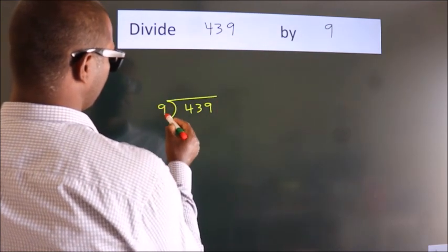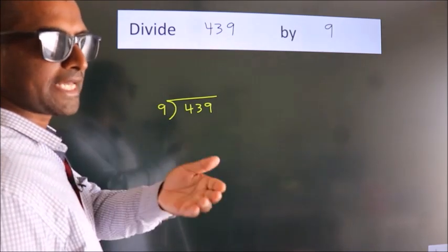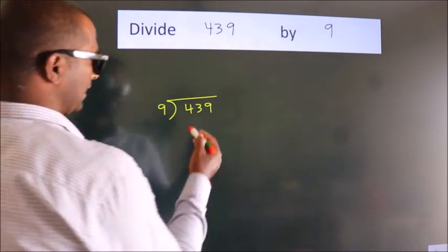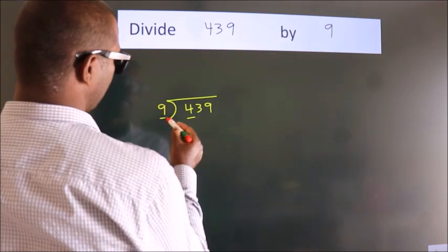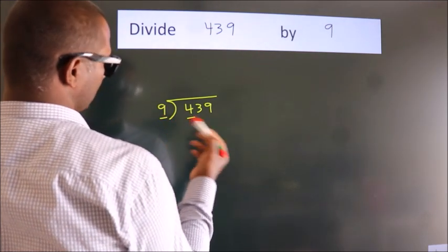9 here. This is your step 1. Next, here we have 4. 4 is smaller than 9, so we